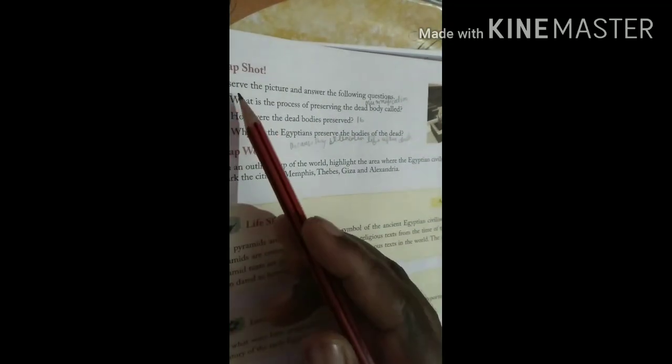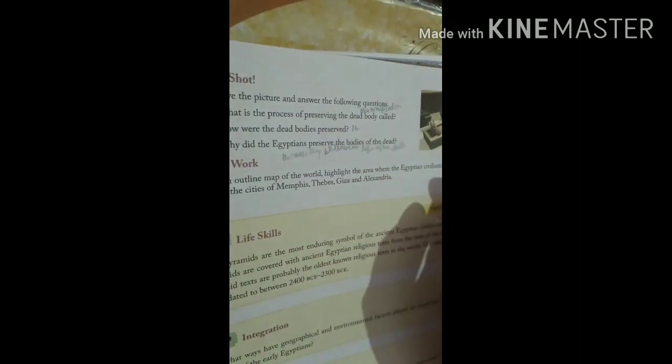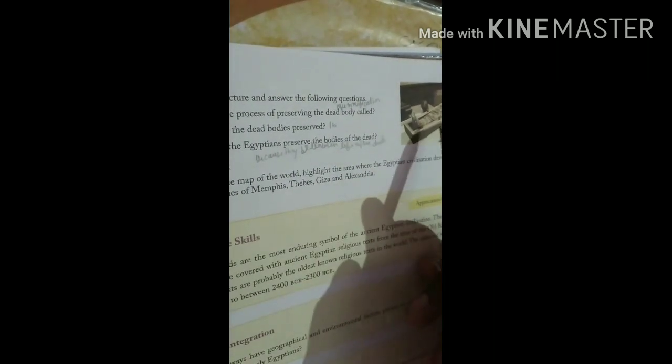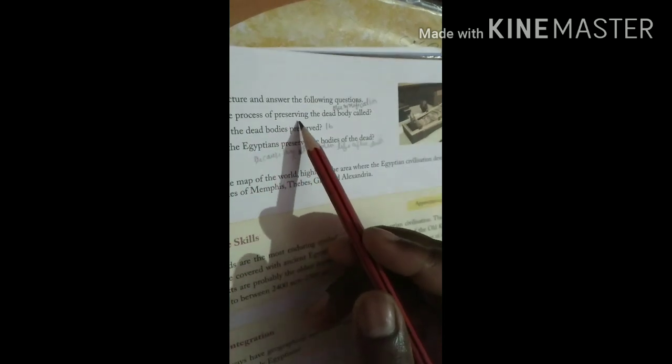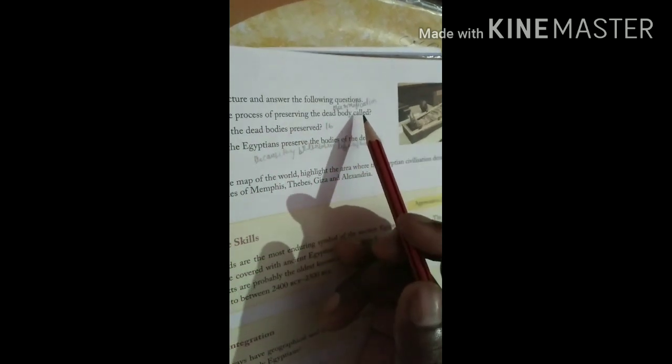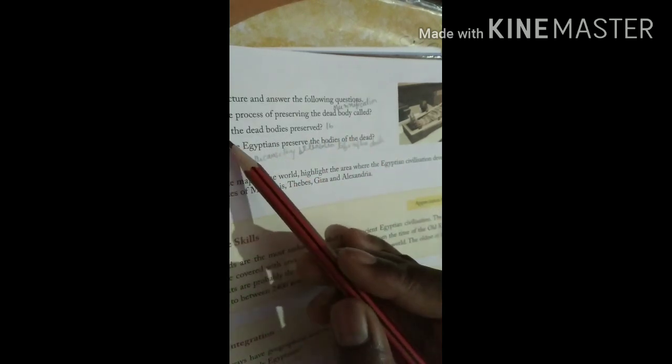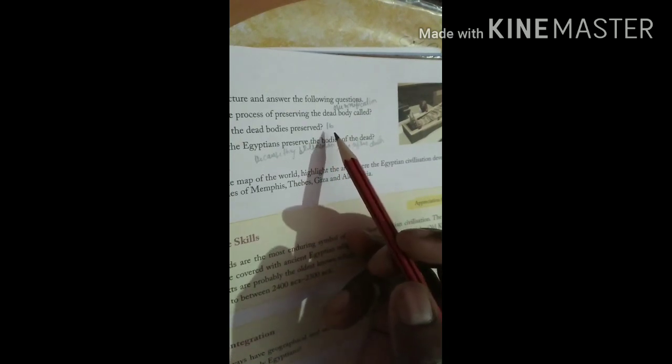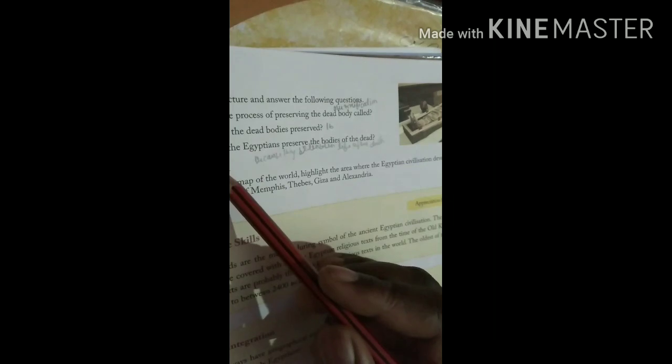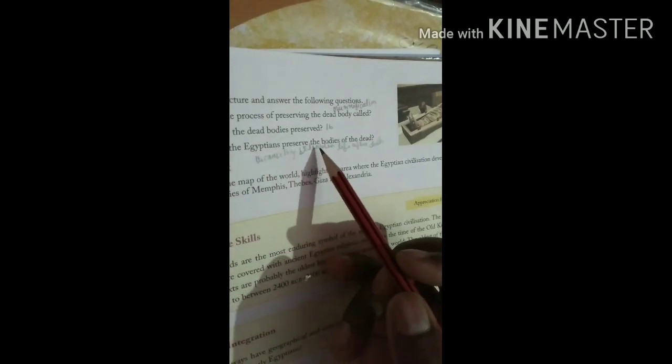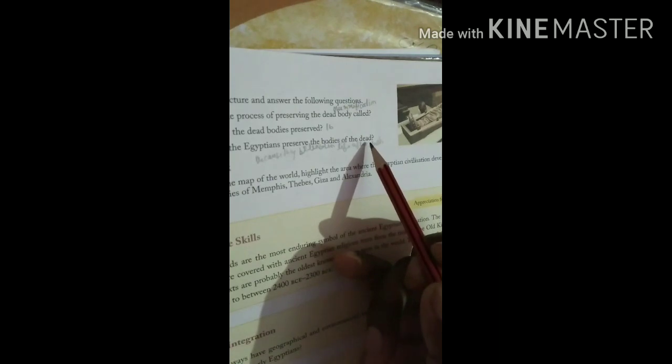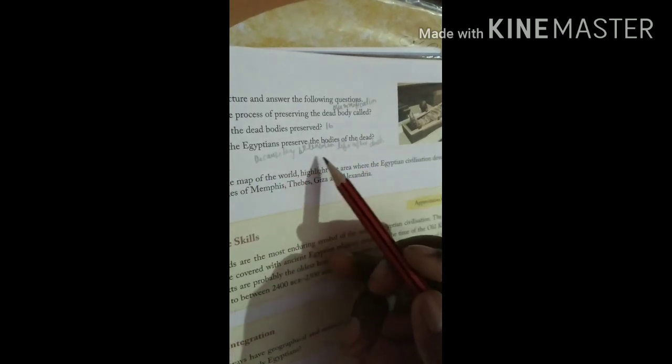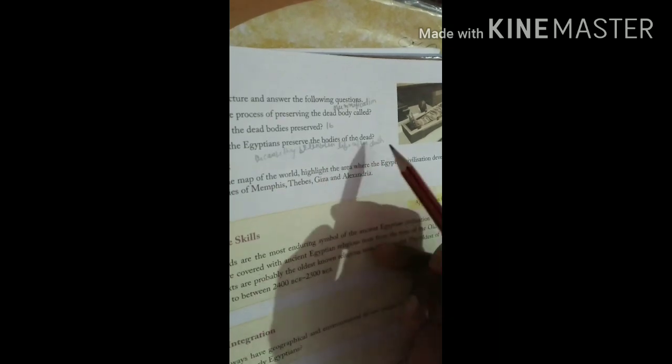Now snapshot and picture study, I hope you can do. Observe the picture and answer the following questions. You have to see this picture, whatever we read in this chapter, and you have to give the answer. For example, what is the process of preserving the dead body called? That is mummification. How were the dead bodies preserved? You have to find out how they used to preserve these dead bodies. Why did the Egyptians preserve the bodies of the dead? Because they believed in life after death.